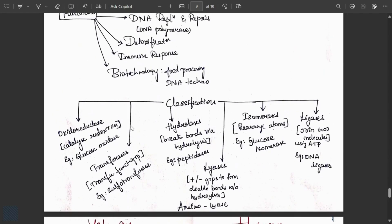Classification of enzymes: six types. Oxidoreductase catalyzes redox reactions, example glucose oxidase. Transferase transfers functional groups, examples sulfotransferase. Hydrolase breaks bonds via hydrolysis, example peptidase. Lyase adds or removes groups to form double bonds without hydrolysis, example ammonia lyase.